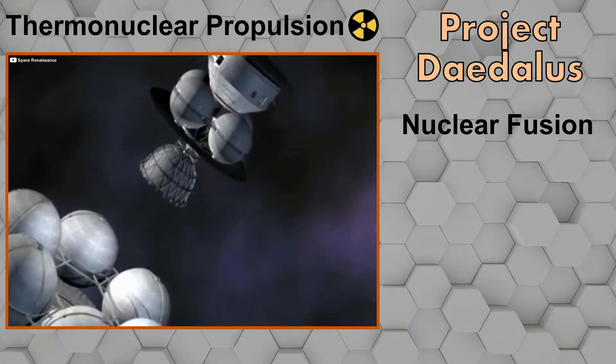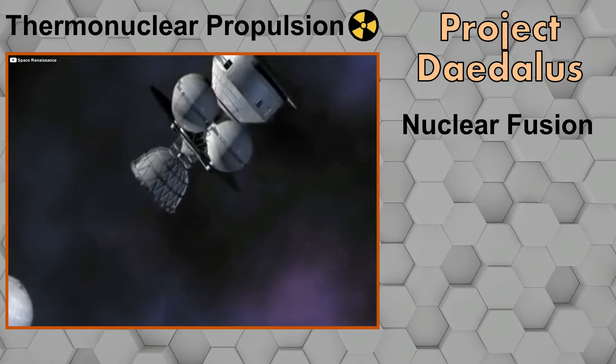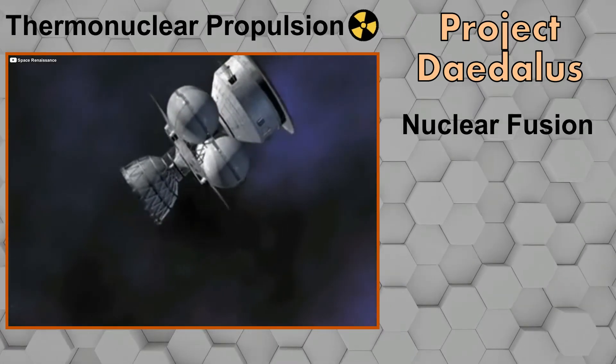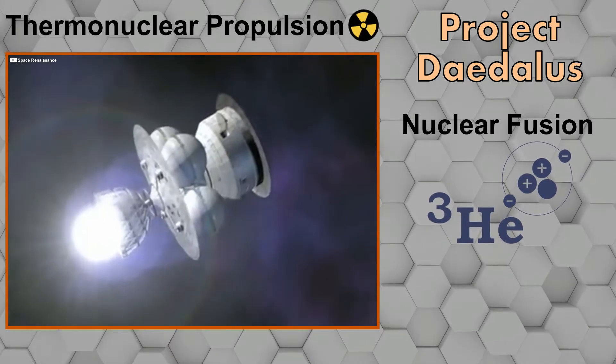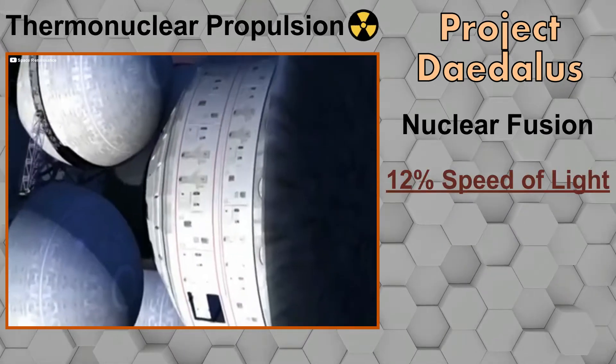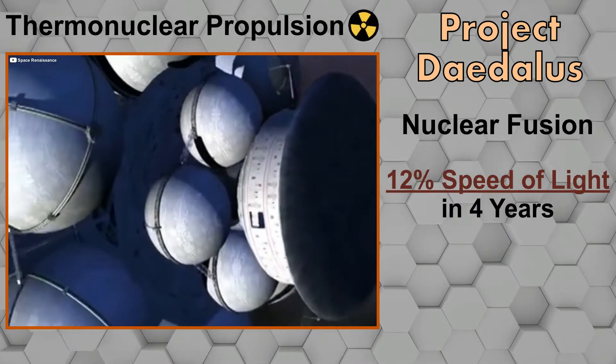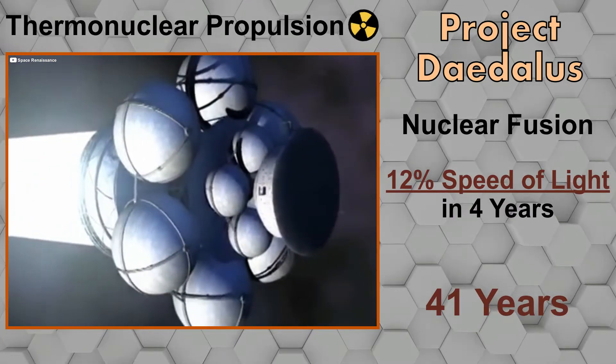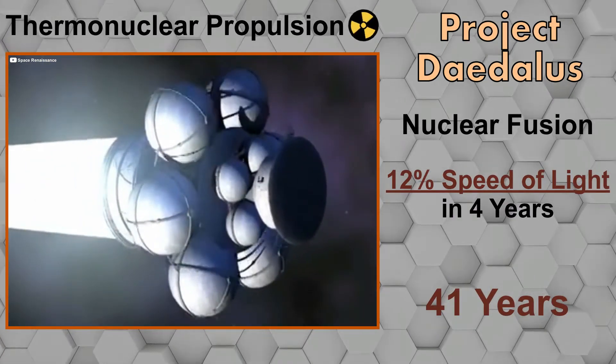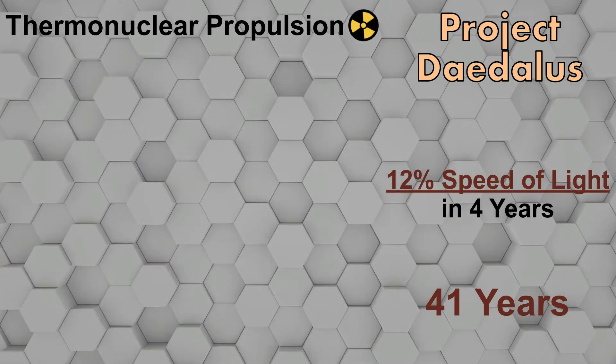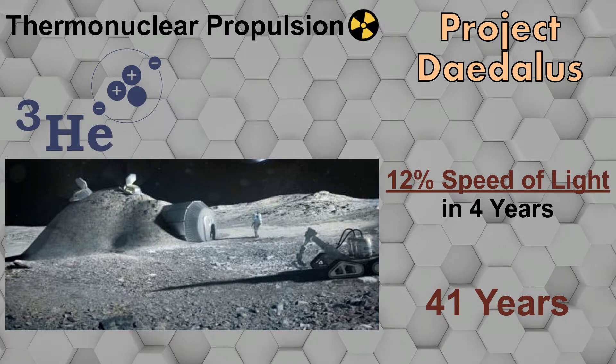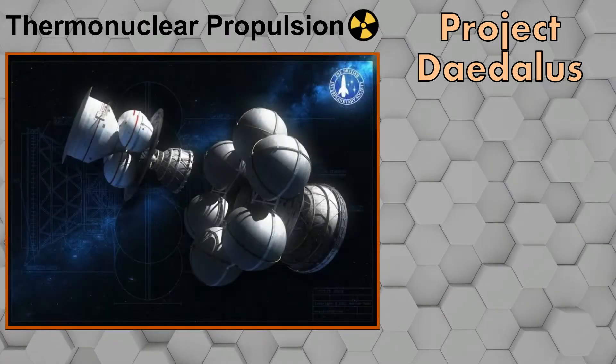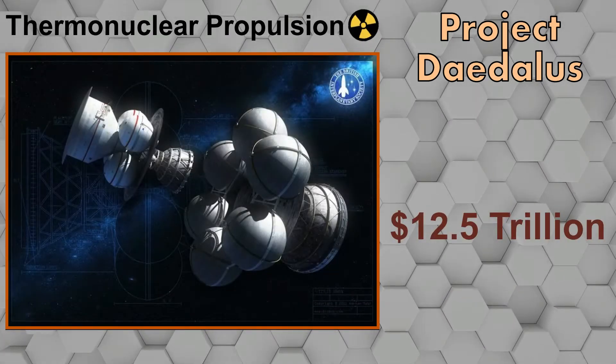Daedalus is a 54,000-ton spacecraft and it is so huge that it would have to be built in orbit. Using helium-3 as fuel for nuclear fusion, the spacecraft can achieve up to 12% light speed over a period of 4 years, and it would take over 41 years to reach Proxima B, which is not substantial improvement over nuclear fission. We would need tens of thousands tons of helium-3 which can be mined from moon. The cost of this project is expected to be more than 12.5 trillion dollars currently.